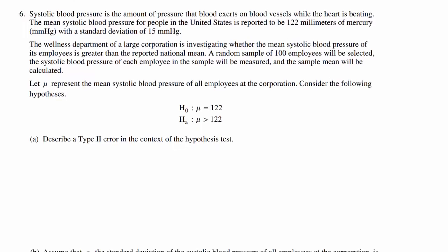Systolic blood pressure is the amount of pressure that blood exerts on blood vessels while the heart is beating. The mean systolic blood pressure for people in the United States is reported to be 122 mm of mercury, with a standard deviation of 15 mm of mercury. The wellness department of a large corporation is investigating whether the mean systolic blood pressure of its employees is greater than the reported national mean. A random sample of 100 employees will be selected, the systolic blood pressure of each employee measured, and the sample mean calculated. Let mu represent the mean systolic blood pressure of all employees at the corporation.